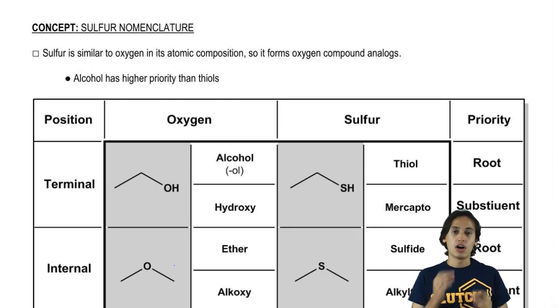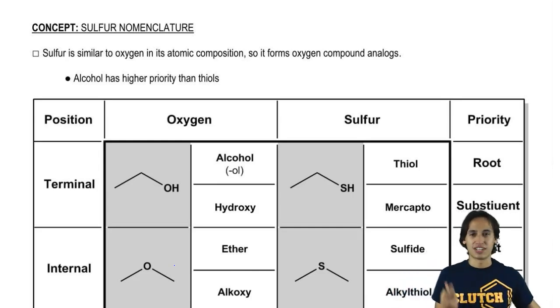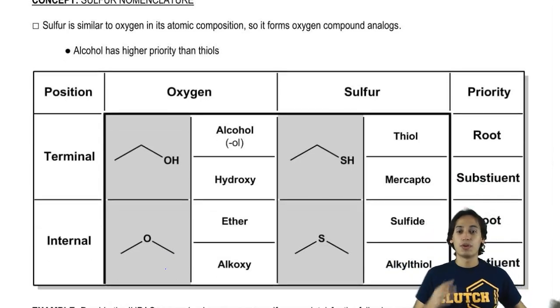If you remember, oxygen is on the second row and sulfur is right below it on the third row. What that means is that many of the compounds you've seen made with oxygen, for example alcohols and ethers, can also be made with sulfur, but they're going to have different names. So I've made this chart that seems kind of confusing at first, but it lists out every single possibility of a sulfur-containing compound that you could have.